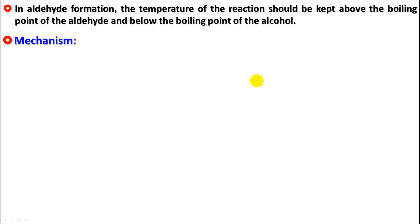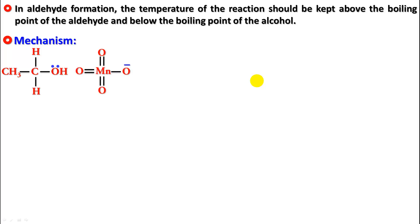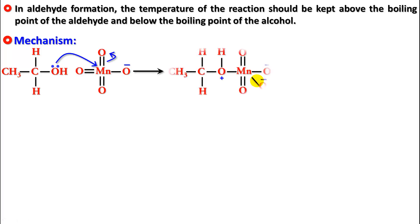Now let's look at the mechanism. I'll show the mechanism using alkaline permanganate; a similar mechanism applies for other oxidizing agents. With the primary alcohol, there is a lone pair on the oxygen. This lone pair attacks the Mn of permanganate ion (MnO4⁻), the pi bond shifts to oxygen, and this creates an intermediate.